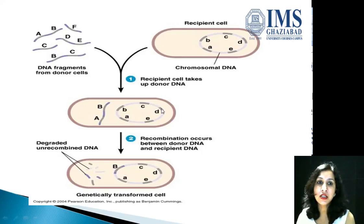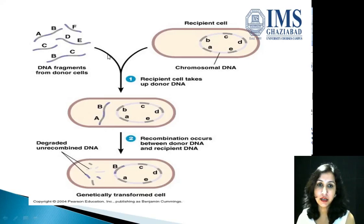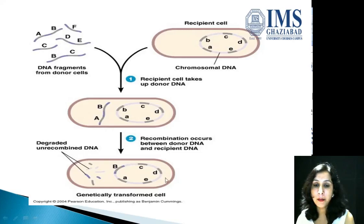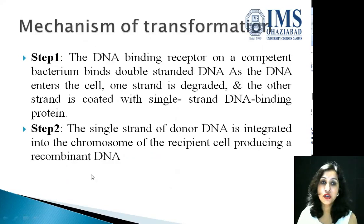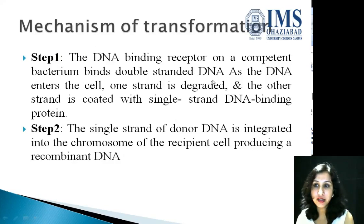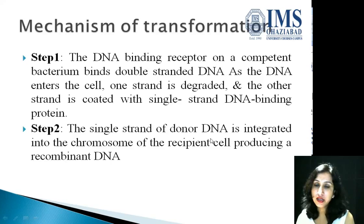E. coli can be made competent by artificial transformation procedures using calcium chloride or electroporation. Regarding the mechanism of transformation: DNA fragments from donor cells are taken up by the recipient cell. Recombination then occurs between donor DNA and recipient DNA, forming a recombined chromosome, while the unrecombined DNA is degraded. In step one, DNA binding receptors on competent cells bind double-stranded DNA; as the DNA enters the cell, one strand is degraded and the other is coated with single-stranded DNA binding protein. This single strand is then integrated into the chromosome, forming a transformed or recombined DNA.